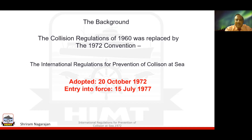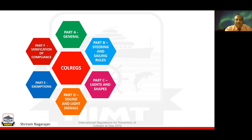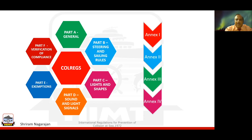This IRPCS or COLREX is divided into six parts — Part A, B, C, D, E and F — followed by the annexes that are also part of this, divided into four annexes: one, two, three and four.